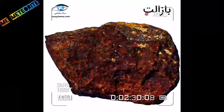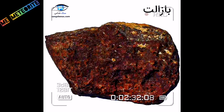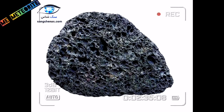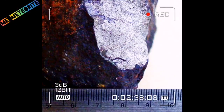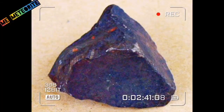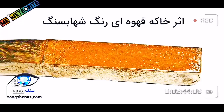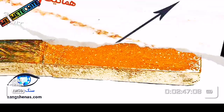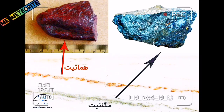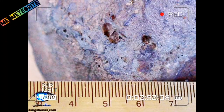First question: identifying original meteorites according to their physical characteristics. Physical methods are the first step in identification of meteorites, and up to 17 percent of accurate and reliable results can be obtained by using them.